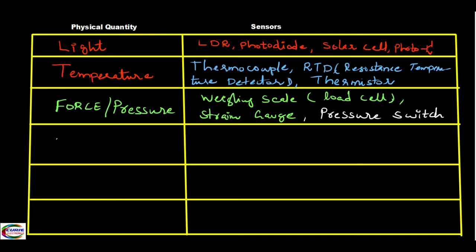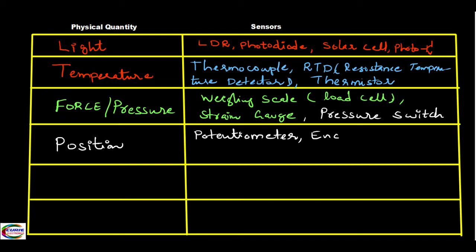Position is also an important quantity that we need to measure in automation. For position sensing, we use a potentiometer — a variable resistor that rotates, and from that rotation we get position data. We also have an encoder; for example, the rotating knob on a washing machine panel is actually an encoder. Another sensor is LVDT — Linear Variable Differential Transformer.